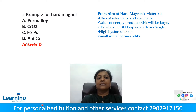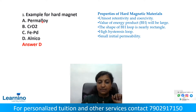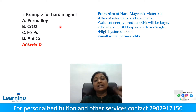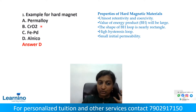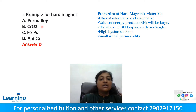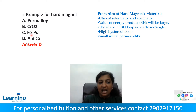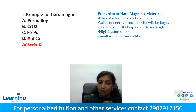Question number 1: Example of a Hard Magnet. We are going to talk about Hard Magnet. Option A: Permaloy. Option B: Zero2. Option C: FEPD. Option D: Alnico.